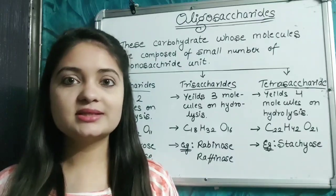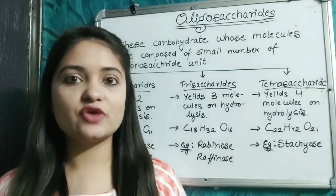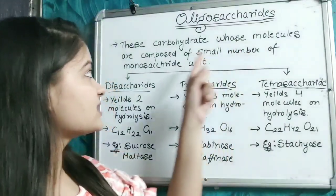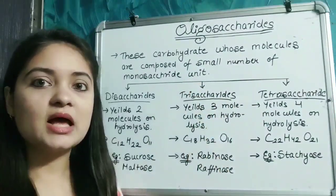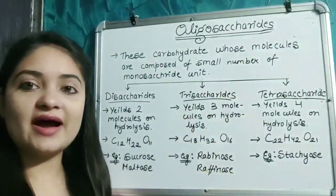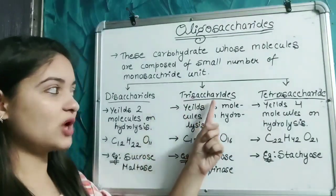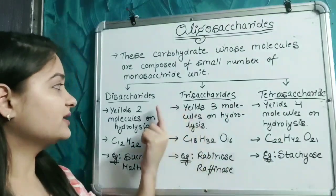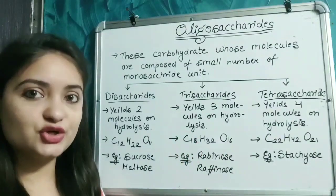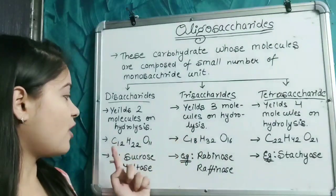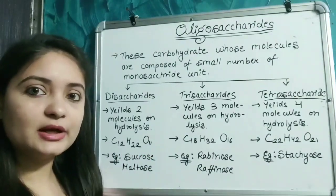Oligosaccharides are the major class of carbohydrates where the molecules are composed of a small number of monosaccharide units. Oligosaccharides are divided into three subcategories: disaccharides, trisaccharides, and tetrasaccharides. Disaccharides yield two molecules of monosaccharide units on hydrolysis; their molecular formula is C₁₂H₂₂O₁₁.